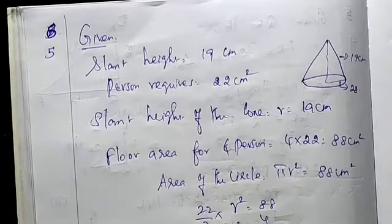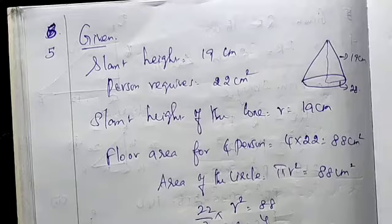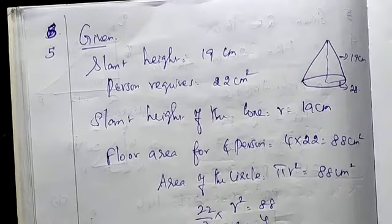Four persons live in a conical tent whose slant height is 19 cm. If each person requires 22 cm² of the floor area, then find the height of the tent.